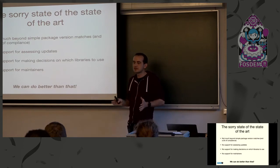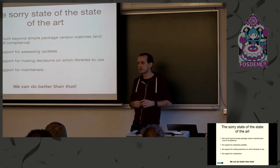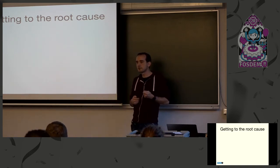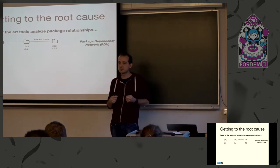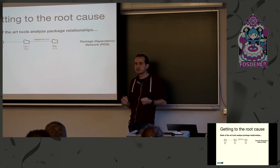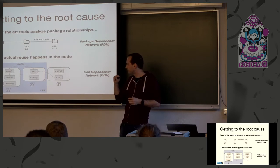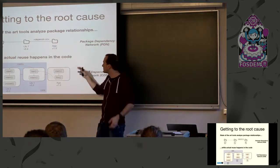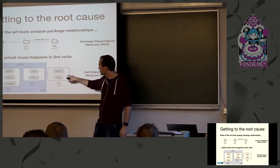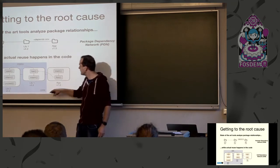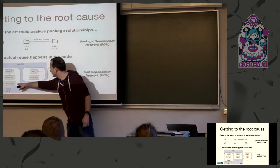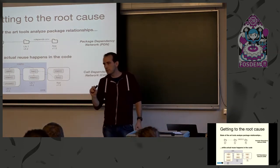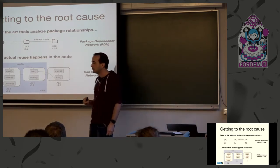This is the state of dependency management as encoded by researchers over the last two to three years. We believe we can do better. The root cause of the problem is that while most dependency management and analysis is done at the package level, the actual use of the dependency happens in the code. This means analysis may show a dependency as important when that part of the code is not actually used at all — so if there's a security bug there, updating may not even be necessary.